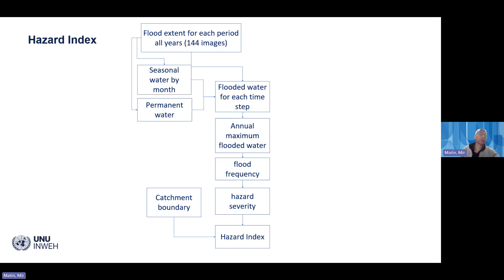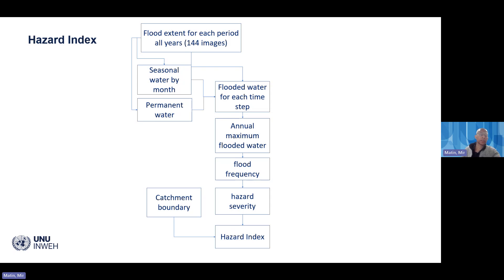Many parts of the basin are regularly inundated during the monsoon, which is not actually flood in the traditional sense, and people in these areas are adapted to living with that water. We combine the flood extent with seasonal and permanent water data to generate actual flooded water for each time step. We then use annual maximum flooded water to generate flood frequency, and derive hazard severity based on frequency — areas flooded more often have higher hazard.